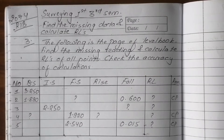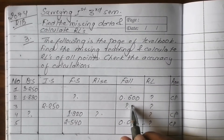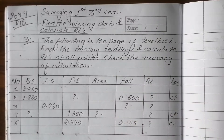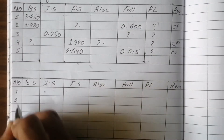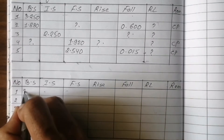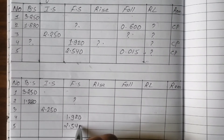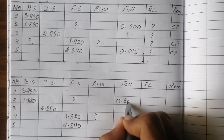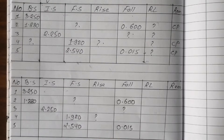Now, how do we do this? Let me present the data. The readings given are: 3.250, 1.880, 2.250. Then question mark. Next: 1.920, 2.540. Question mark. Then 0.600. Question mark. Then 0.015. Question mark. We need to find the missing values.